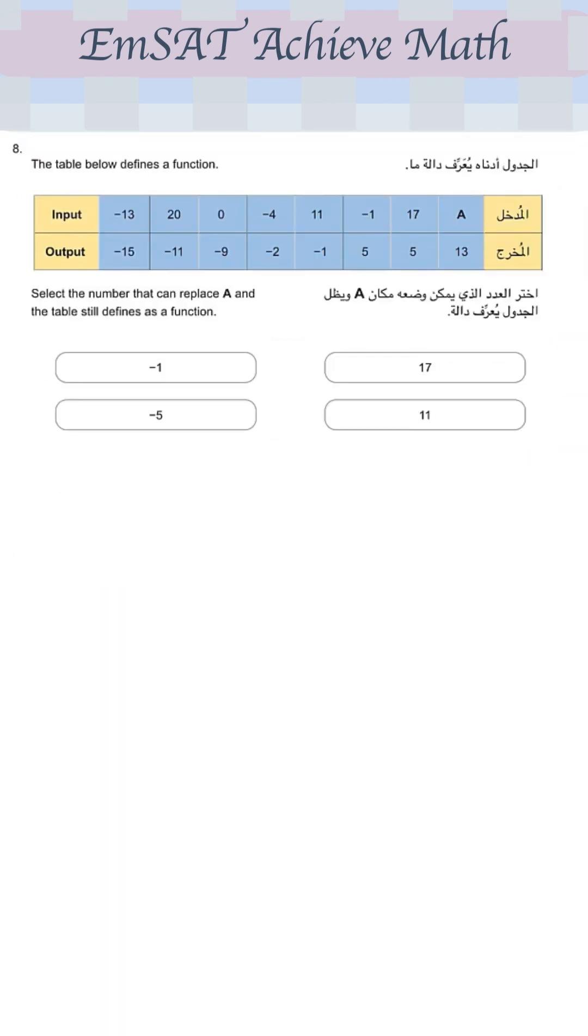The table below defines a function. Select the number that can replace A and the table still defines as a function. Now you know the basic properties of a function so that the input or the domain should not be repeated. So if we select minus 1, if you look at the input row, we have already minus 1. So we cannot put A as minus 1.